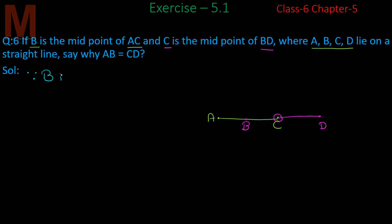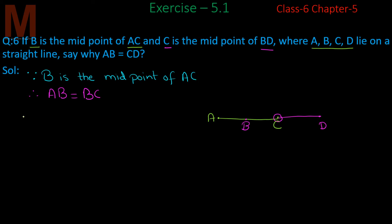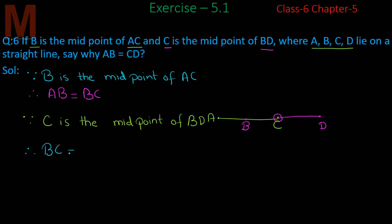Since B is the midpoint of AC, we get therefore AB = BC — this is our first equation. Since C is the midpoint of BD, we get therefore BC = CD — this is our second equation.